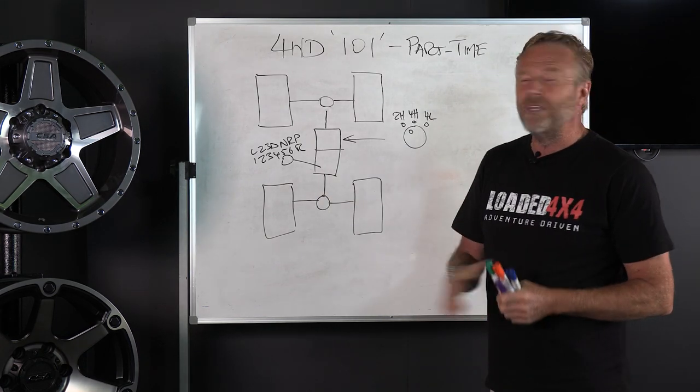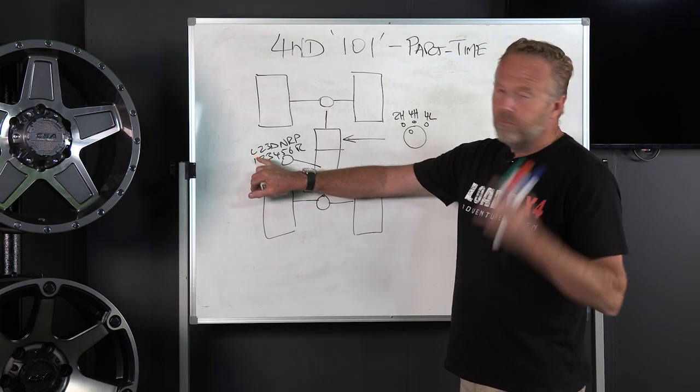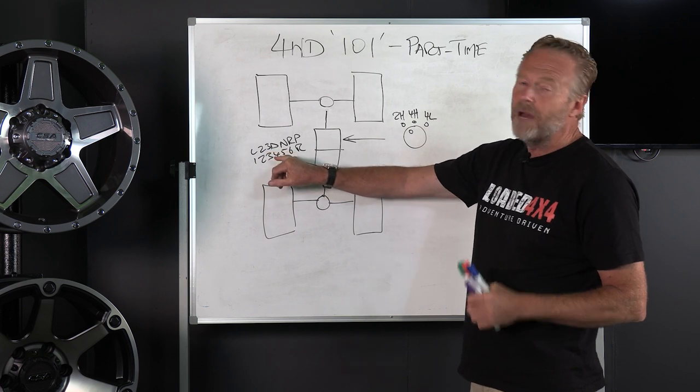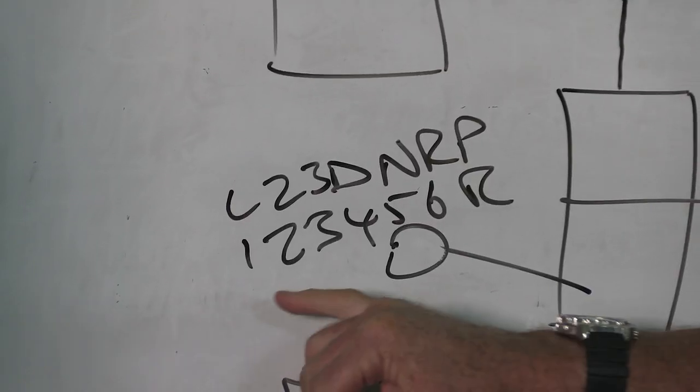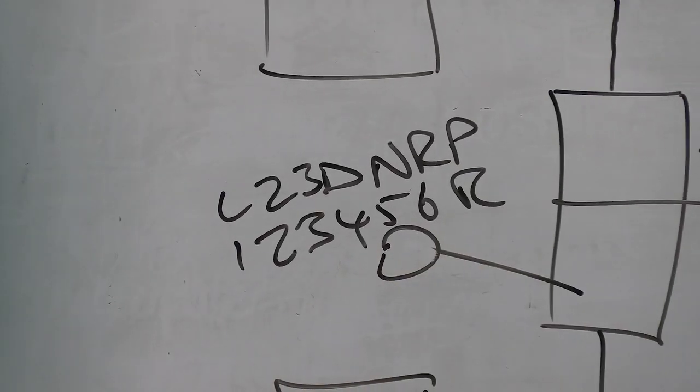Depending on whether you've got an automatic version with L which is first gear or low, second, third, D for drive, neutral, reverse and park, or a manual: one, two, three, four, five and six and reverse.